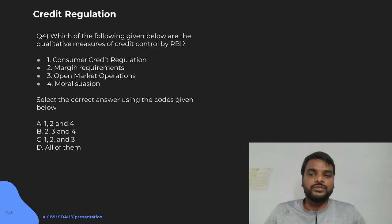Moving on to the next question on RBI and credit control. Which of the following given below are the qualitative measures of credit control by RBI? We know that there are two types of measures that RBI takes, because credit regulation is one of the foremost jobs of RBI. It takes both qualitative measures and quantitative measures. Quantitative measures are aimed to control the volume of credit. You can compare with the contractionary policy and expansionary policy where you will change the policy rates.